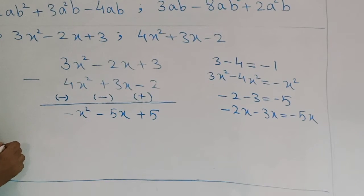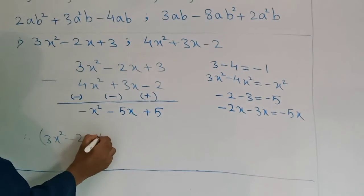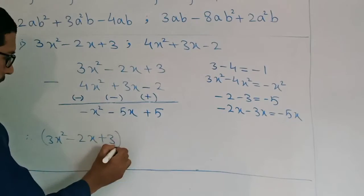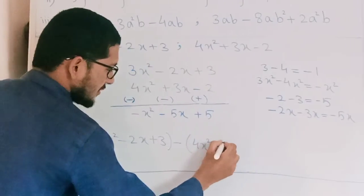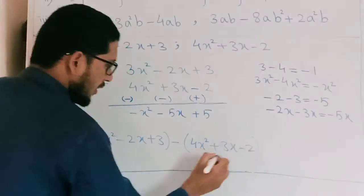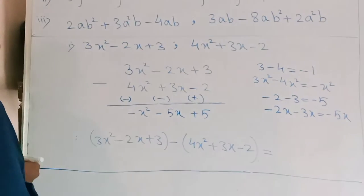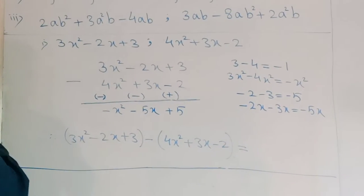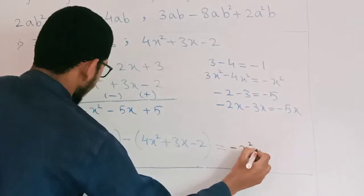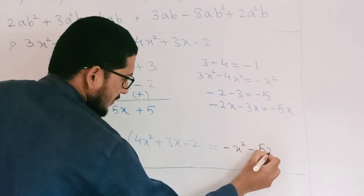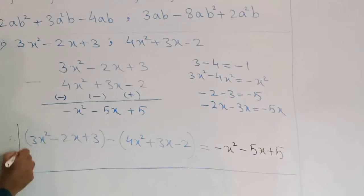Therefore: (3x² minus 2x plus 3) minus (4x² plus 3x minus 2) equals minus x² minus 5x plus 5. That is your answer for the first example.